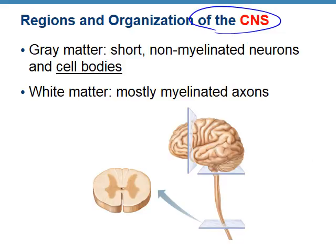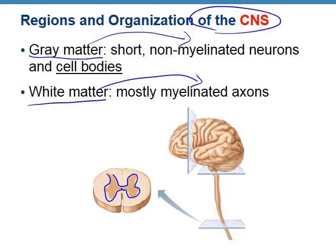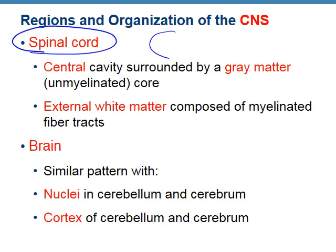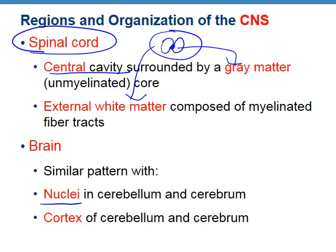Before we move on, we need to talk about some of the organization of the central nervous system. We have gray matter and white matter. Think of white matter as myelinated and fast; gray matter as unmyelinated and slow and steady. In the spinal cord, gray matter forms the central butterfly shape, and everything outside is white matter. In the brain, we're going to see nuclei and a cortex — and these are all gray matter.